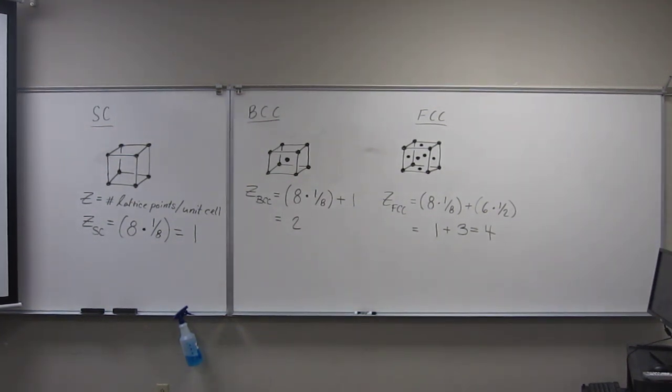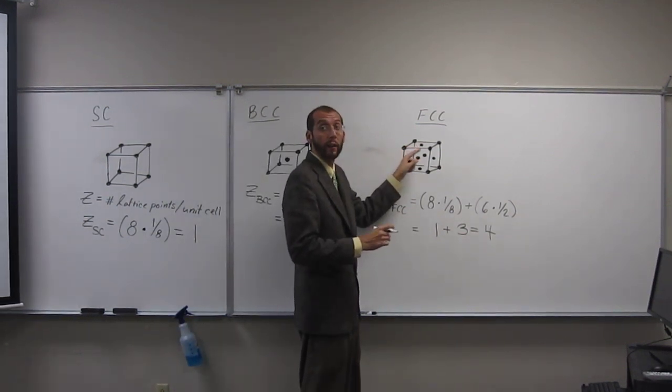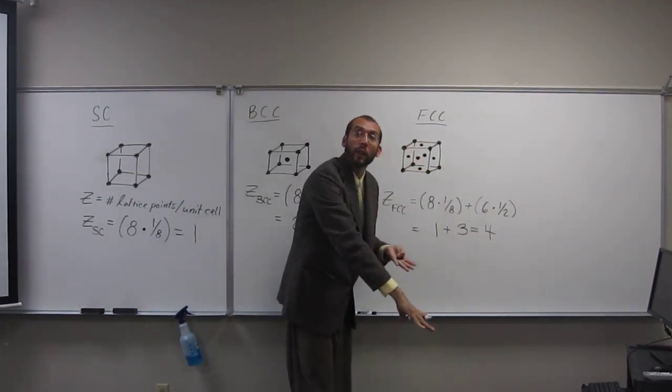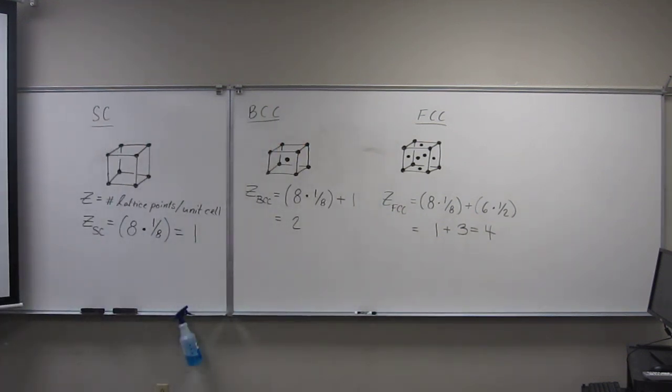Yeah? Why is there one-half? Because when you look at these ones on the face here, only half of them is within the unit cell. Does that make sense? Okay. Because you're kind of bisecting that thing, right? Any other questions on this? Okay, it's very important for what we're going to learn in a few seconds.